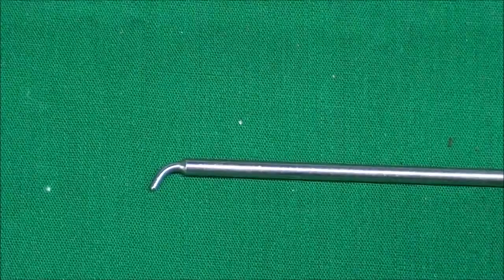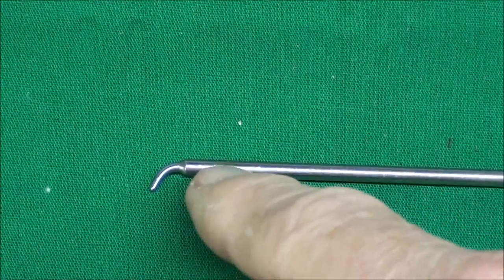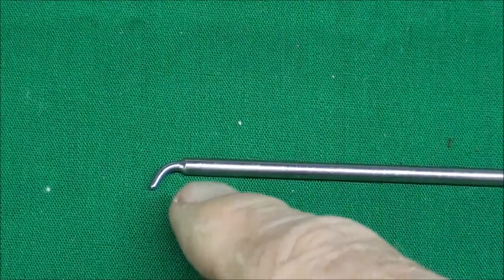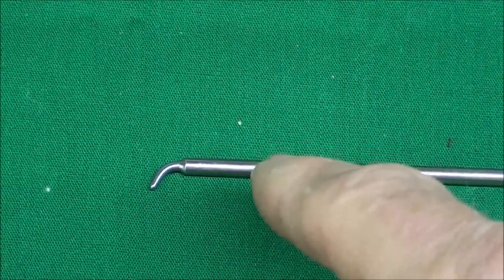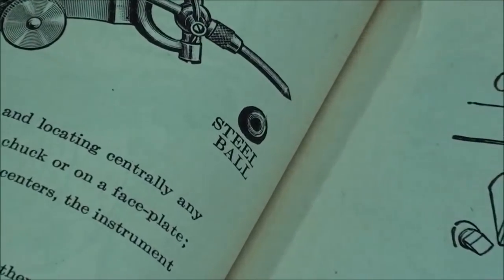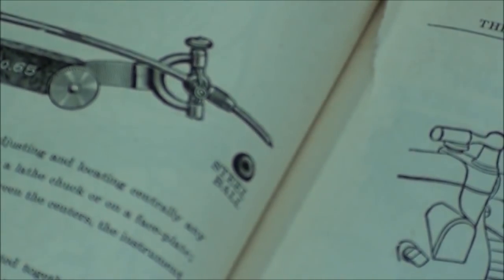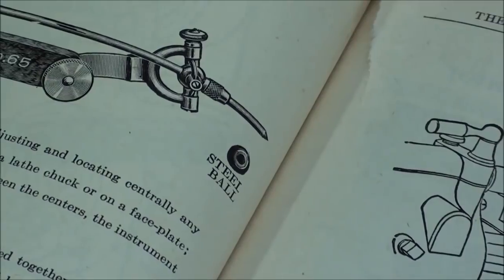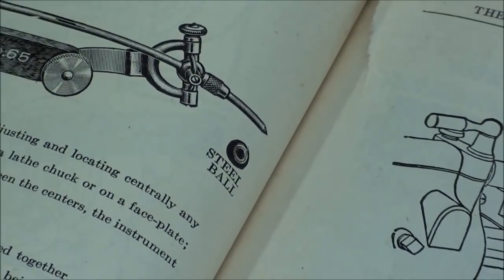The Brown and Sharp came with several different rods, and one of them has like a hook on the end, and that can be used for indicating holes. Starrett on the other hand included a ball that could fit on the end of the rod as you see in this picture, but that thing was probably lost by 1947.